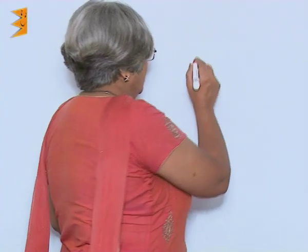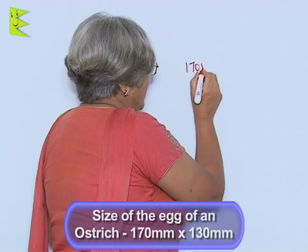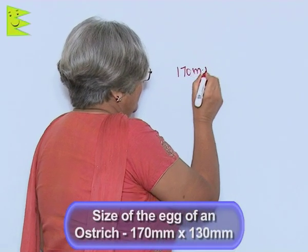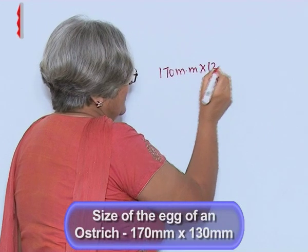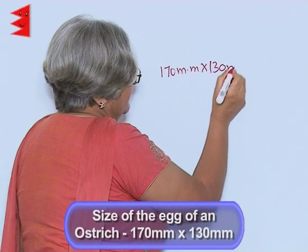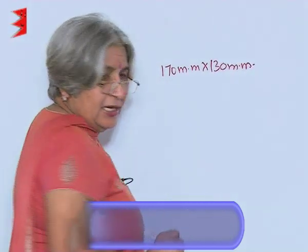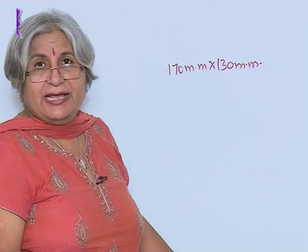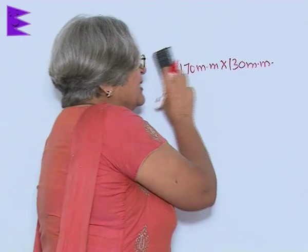The size of the egg of the ostrich is 170 mm by 130 mm. Not only is there a difference in the cell size or cell number — even the complexity of a cell is different, and the cells are categorized accordingly.